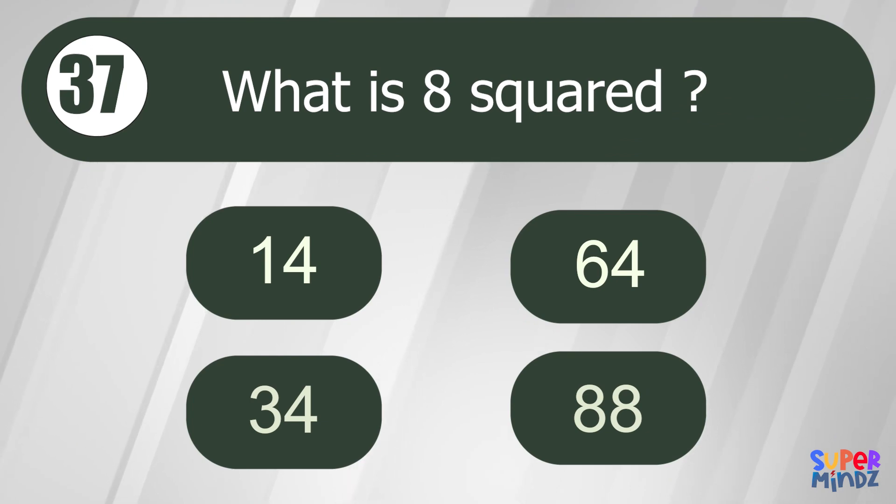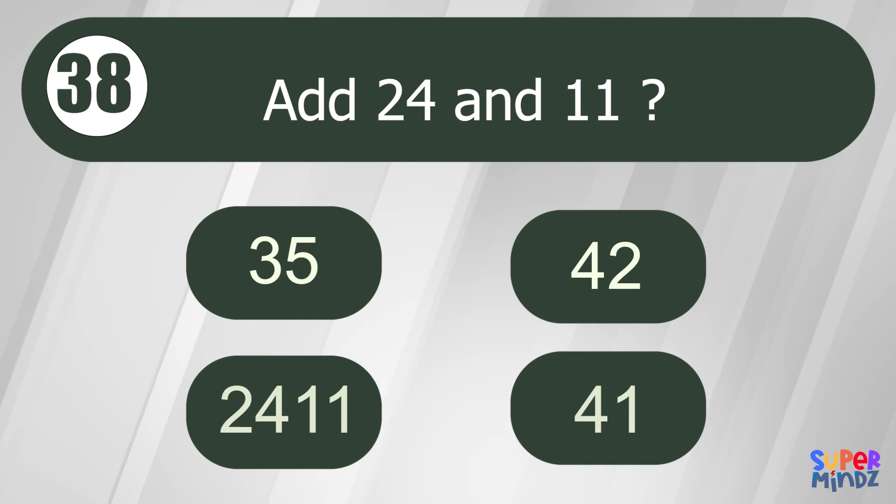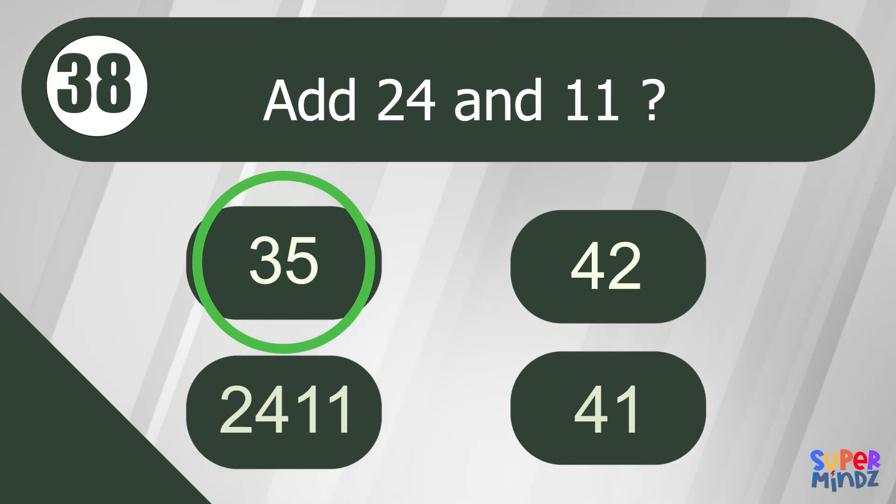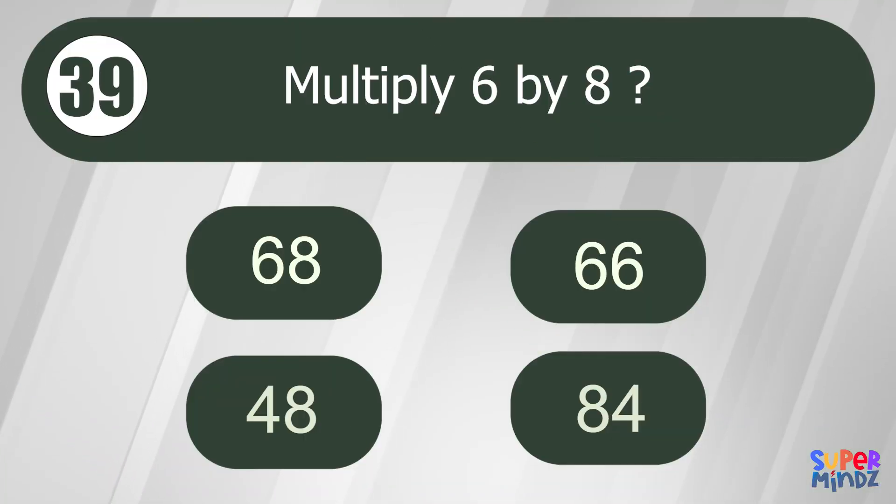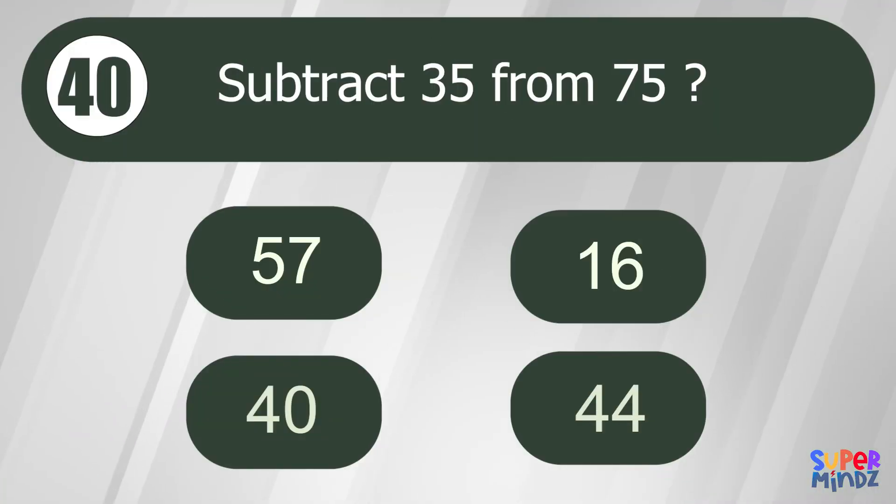What is 8 squared? 64. Add 24 and 11. 35. Multiply 6 by 8. 48. Subtract 35 from 75. 40.